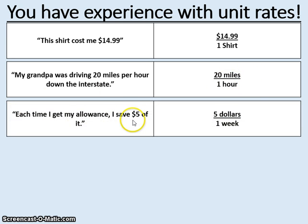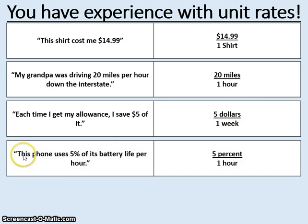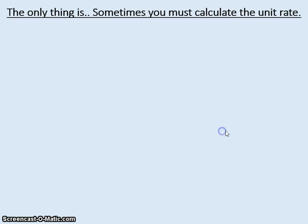Each time I get my allowance I save $5 of it, so that'd be $5 every one week. Another unit rate. This phone uses 5% of its battery life every hour, 5% every one hour. You've made lots of unit rate comparisons in your life.